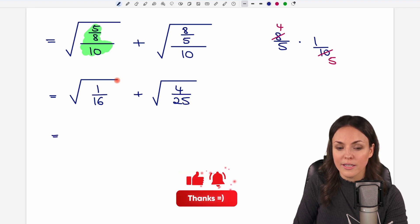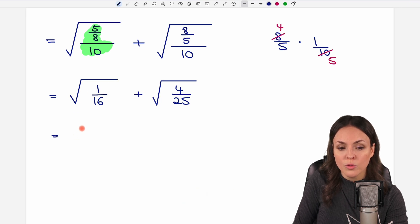Now we can calculate the square roots. The square root of 1 equals 1 and the square root of 16 equals 4. And then here as well, the square root of 4 is 2 and the square root of 25 is 5.